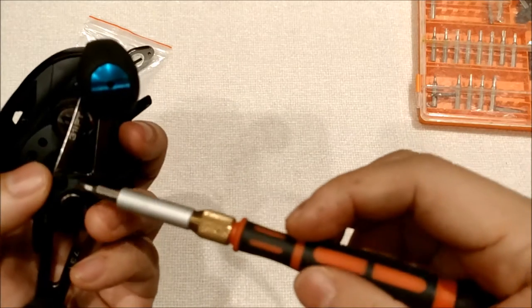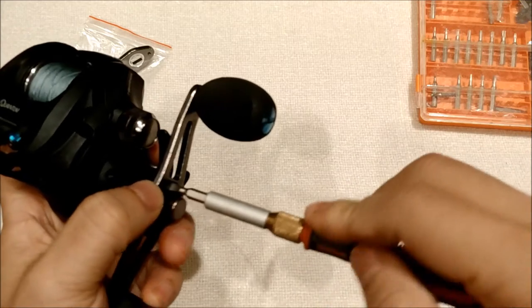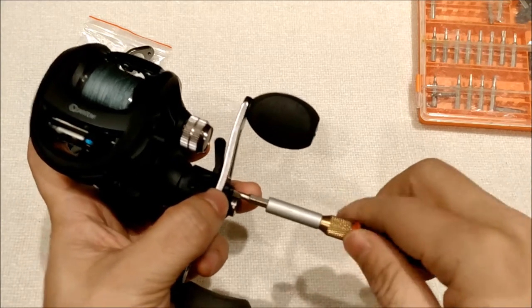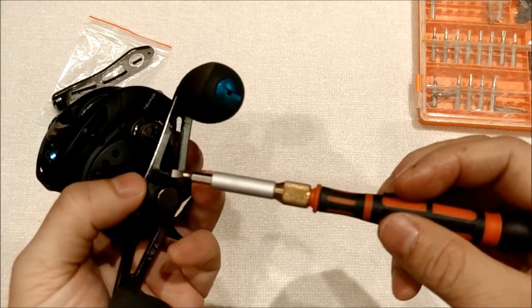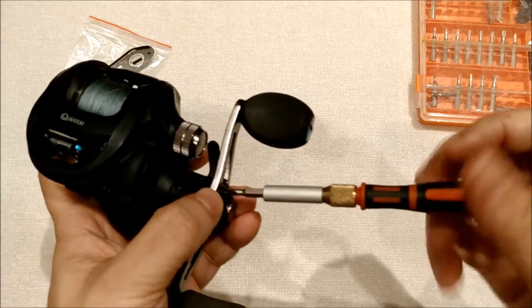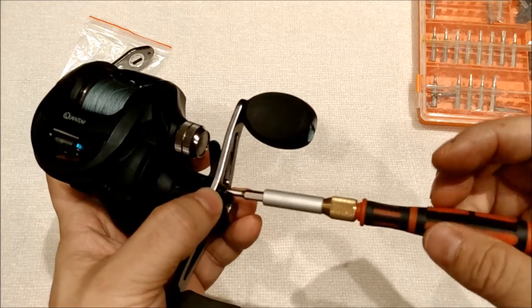First we remove the nut cap like so, some baitcasters don't even have one. And also make sure that you have a towel on the surface that you're working on in case the screws and the nut drop off and bounce off to some place that you can't find it later.